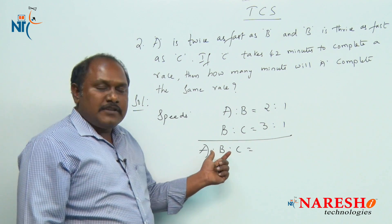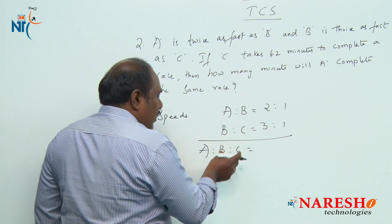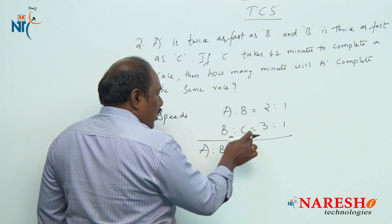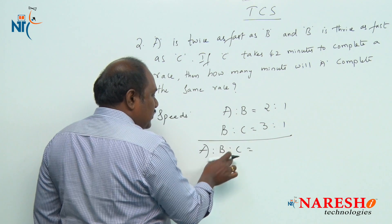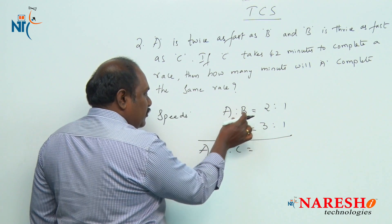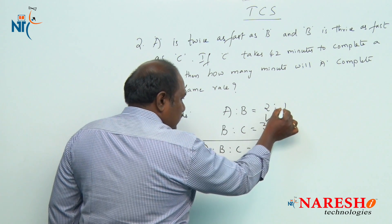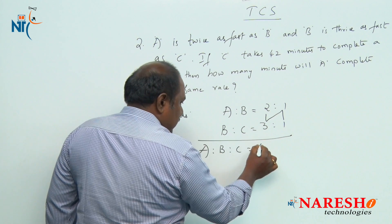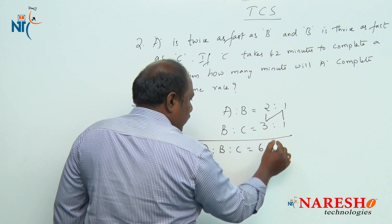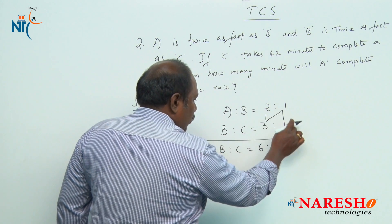The ratio of the speeds of A, B and C: we have already learnt a method in ratios. How to find the ratio of A, B and C when we are given A is to B and B is to C? Reverse n: 2 into 3 is 6, 3 into 1 is 3, 1 into 1 is 1.